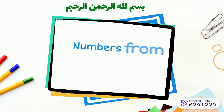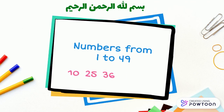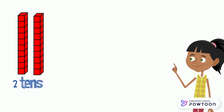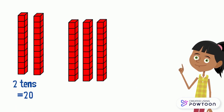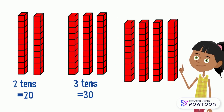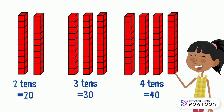Numbers from 1 to 49. First we are going to remember that 1 ten equals 10. 2 tens equals 20, 3 tens equals 30, 4 tens equals 40.